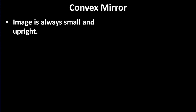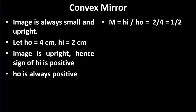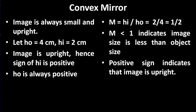In a convex mirror, whatever the position of the object, the image is always small and upright. Let height of object be 4 centimeters and height of image be 2 centimeters. The image is upright, that is formed above the principal axis, and hence according to sign convention, HI is taken positive. Height of object is always taken positive. The magnification is plus half. Magnification of half means magnification is less than 1, indicating that the image size is less than object size. The positive sign indicates that the image is upright.